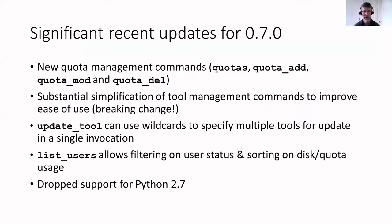The most recent release of Nebulizer includes several significant updates. For example, there are new quota management commands. There has been a substantial simplification and refactoring of the tool management commands to improve ease of use — please note that if you have used Nebulizer in the past, this is a breaking change. The update tool command can now use wildcards, so you can specify multiple tools to be updated in a single invocation. The list users command now allows filtering on things like user status, and you can also sort on disk or quota usage. Finally, we've also dropped support for Python 2.7.